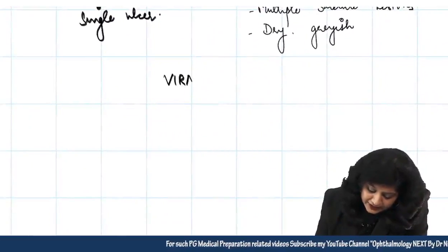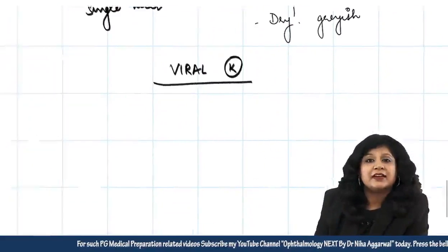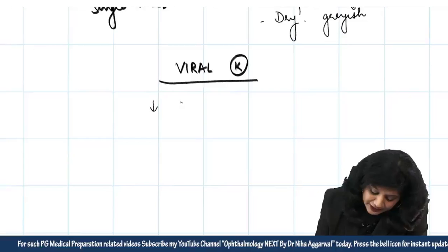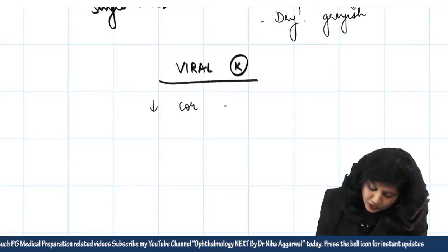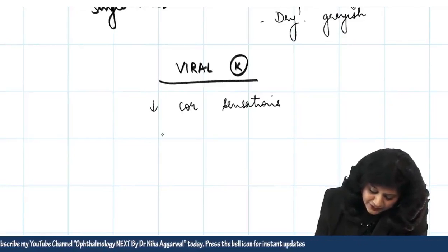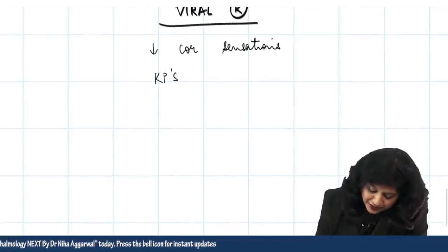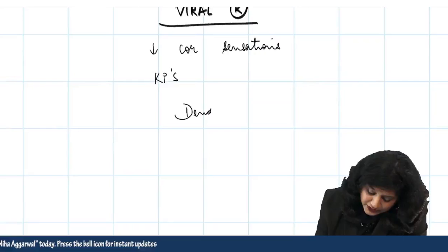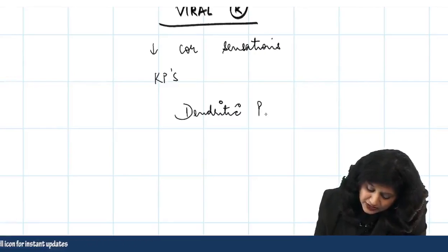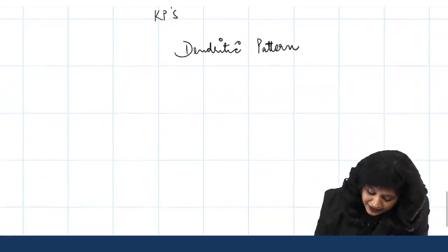In viral keratitis, you will always have decreased corneal sensations, presence of keratic precipitates, and a dendritic or pseudo-dendritic pattern.